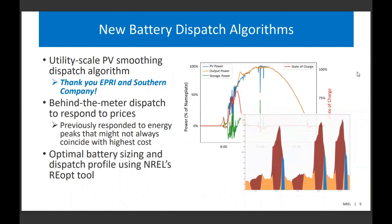A lot of other exciting work has been in the realm of dispatch algorithms. We have a variety of automated — not optimized, but automated — dispatch algorithms depending on whether your battery is front of the meter or behind the meter. The dispatch of the battery is obviously one of the most important things in calculating its potential value. Shout out to F3 and Southern Company, who developed a PV smoothing algorithm and partnered with us to implement it in SAM, so you can dispatch the battery to smooth the ramp rates in your PV system.